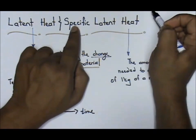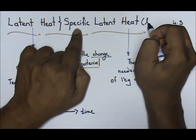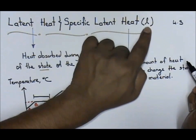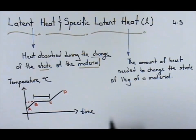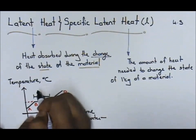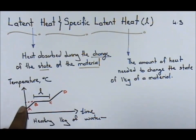It refers to this point. The symbol for specific latent heat is given as L. Basically, if I'm heating up one kilogram of water, this is my L. From B to C, it refers to the boiling point.